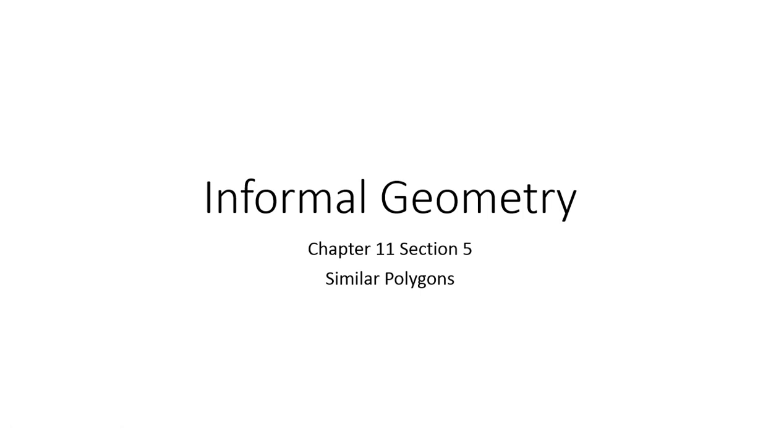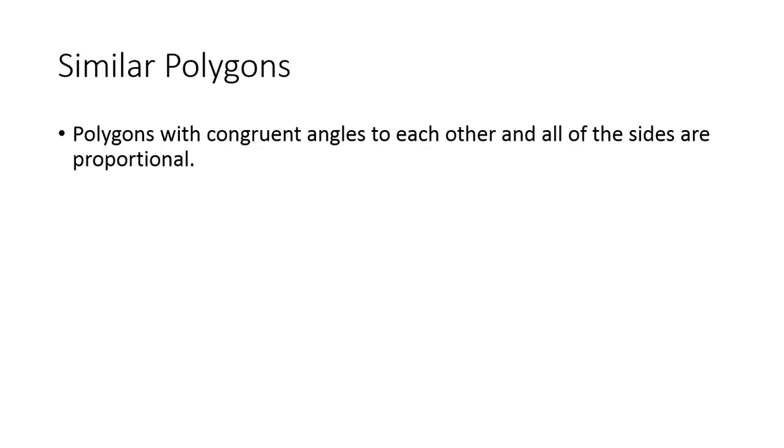Moving on to section 5 in this informal geometry, chapter 11, we're looking at similar polygons. Similar polygons are polygons that are the same shape, but they might just have different lengths of their sides, meaning one's slightly larger than the other, but it's been scaled up.